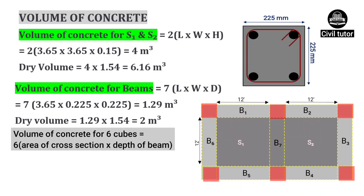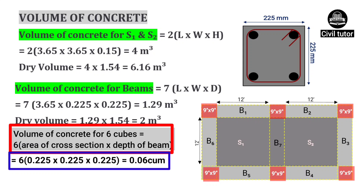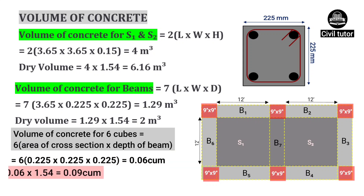The volume of concrete for the left-out portions will be equal to the summation of cross-sectional areas of each column into depth of beam. Let the cross-sectional area of each column be 9 inches × 9 inches, or 225 mm × 225 mm. Volume of the six square-shaped cube portions will be equal to 6 times the area of cross-section of each column into depth of beam, which equals 0.06 cubic meters. The dry volume will be equal to 0.06 × 1.54, which equals 0.09 cubic meters.